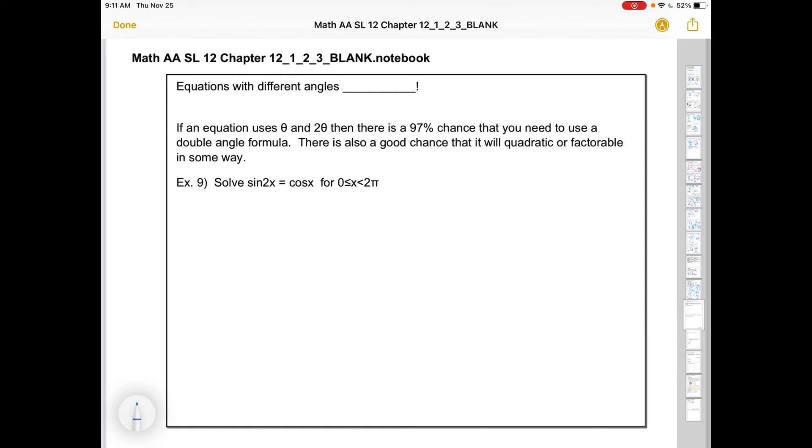This brings us to double angle identities that are in equations. So equations with different angles, let's just be ridiculously general about this and say, are bad or are tricky. Now, if you have your GDC, of course, you'll solve graphically. But if an equation uses a θ and a 2θ, then there's a 97% chance you need to use a double angle formula. There's a reason that they put a sin 2θ in there. So if you see sin 2θ, you should be suspicious, especially if there's also a sin θ. In this one over here, we've got x's, but same deal. We've got a sin 2x and a cos x. I mean, to me, this gets my spidey senses tingling. I'm thinking, hold on. There's a sin 2x and there's an identity for sin 2x in the formula booklet. Maybe I should just use it.